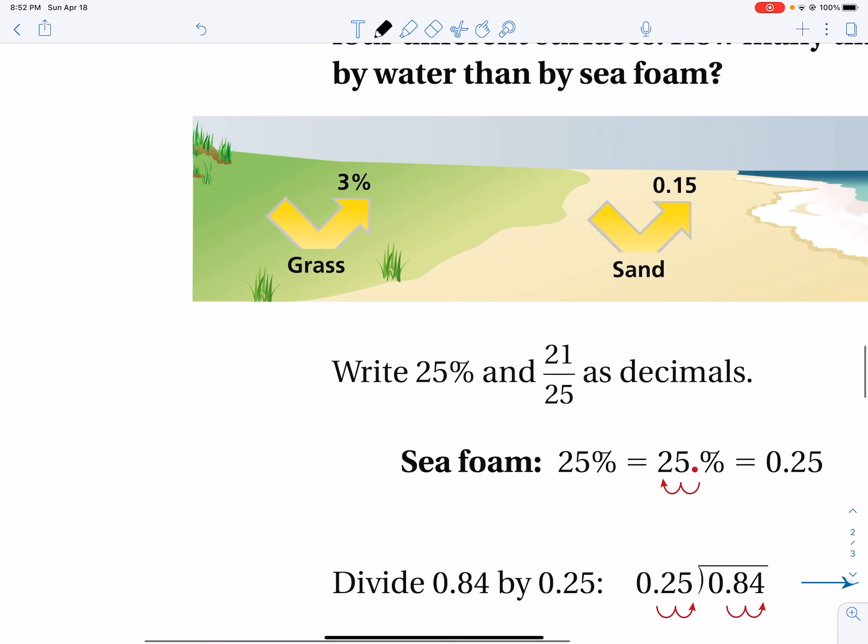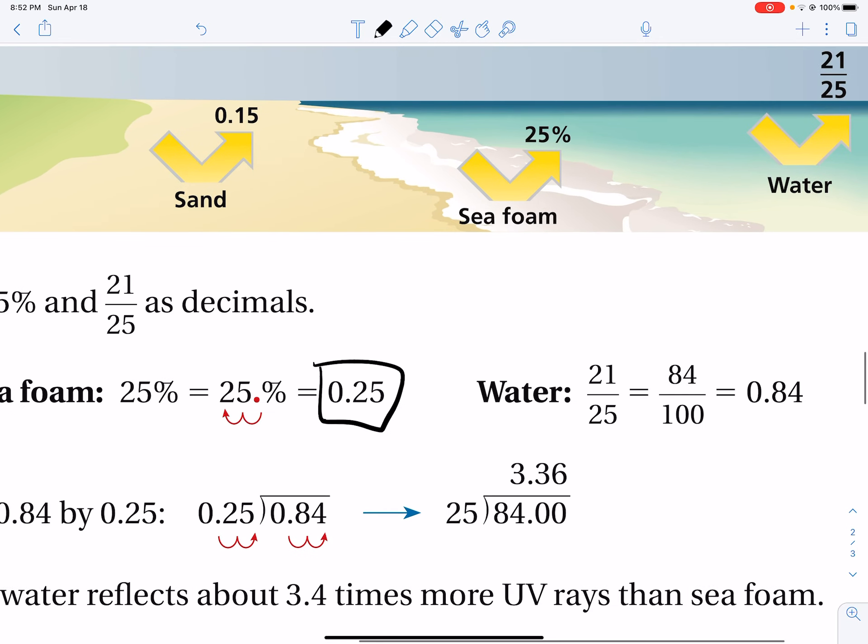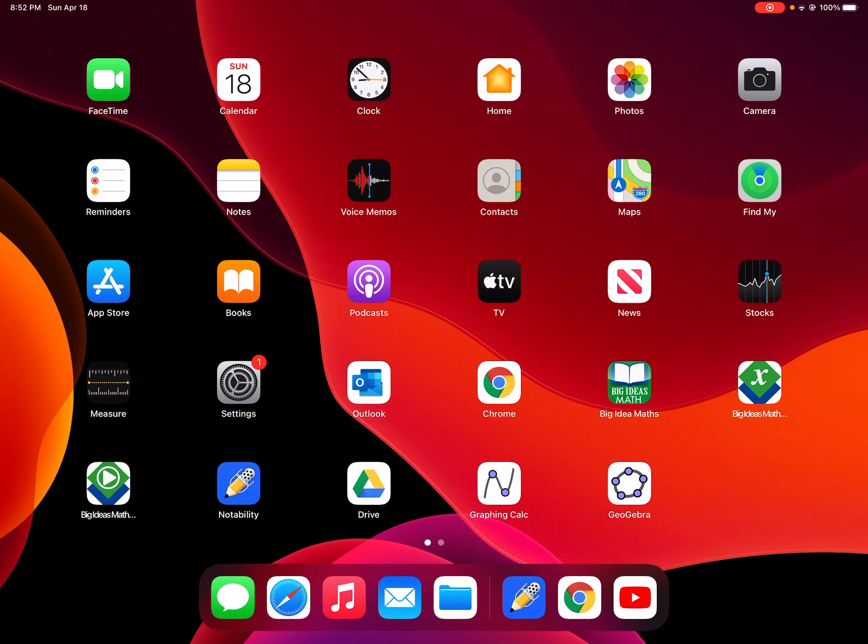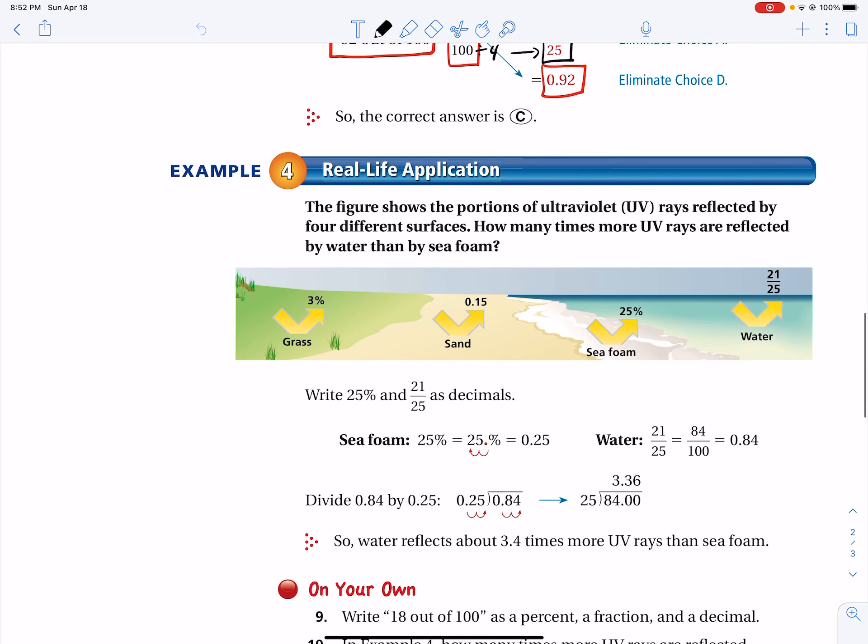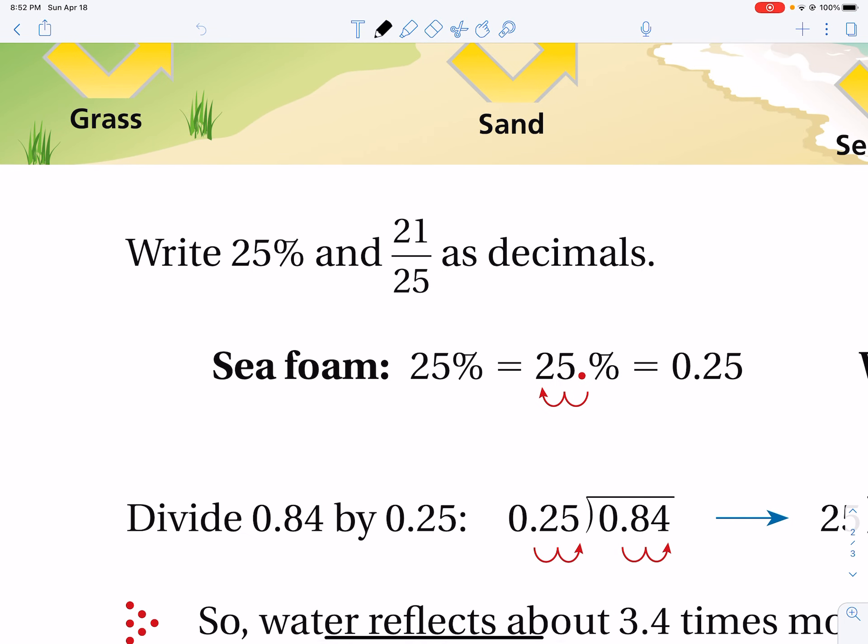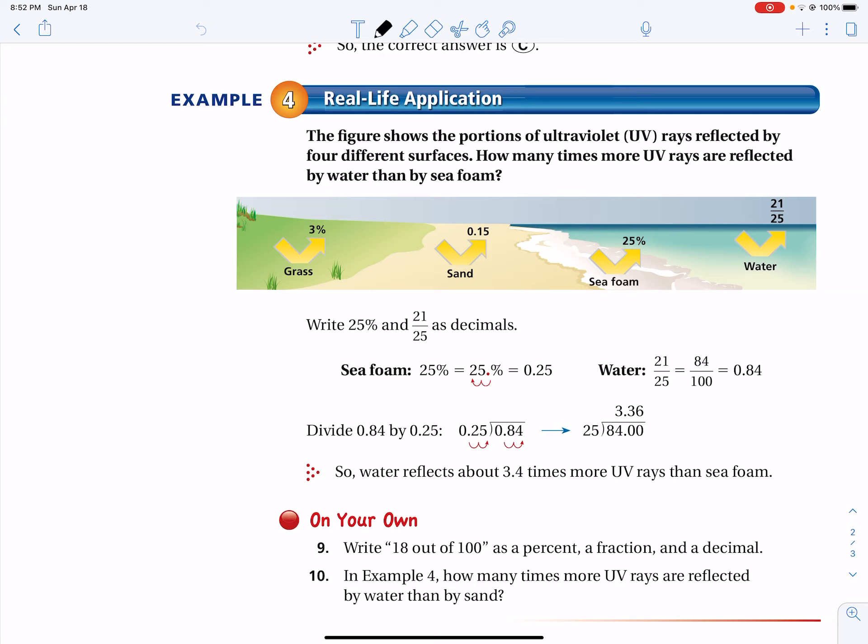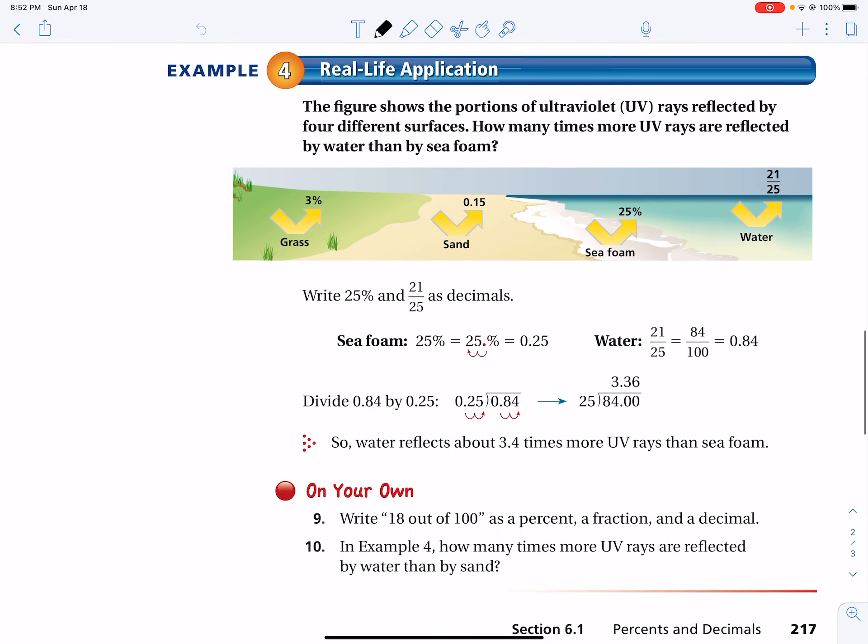And so here's some other questions where you have 25% writing that as a decimal. Makes sense. It's also this fraction writing that as a decimal. Makes sense. 25 and 21 out of 25, writing those as decimals. And so what you're doing is looks like we're going to compare these decimals, these percents, these fractions to find out some type of relationship. But we'll go ahead and skip that. We don't need to necessarily solve this particular question.